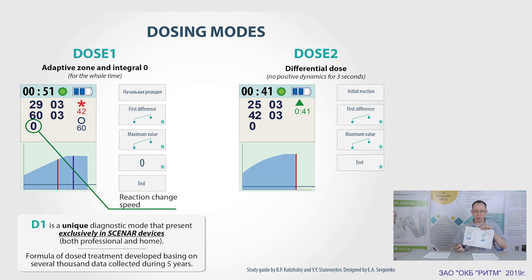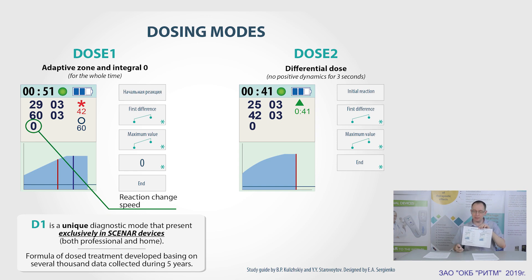The dose indication means that according to our criteria, during the treatment time, the reaction changed sufficiently enough to cause the body's response. The dose is indicated by the red asterisk symbol, and the value below it indicates the value of reaction at the moment when the dose was reached. The zero parameter is indicated by the blue symbol, meaning the reaction change speed fell less than 1% per second. The numbers below the zero symbol is the value of reaction at the moment when zero was reached. On the graph, dose and zero are indicated by vertical lines.